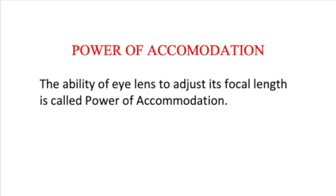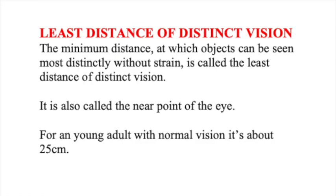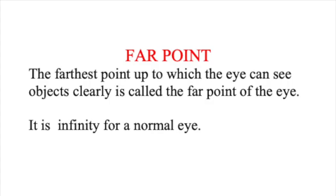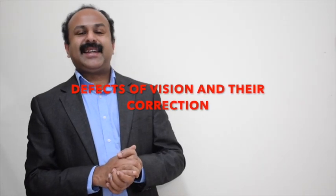The ability of the eye lens to adjust its focal length is called the power of accommodation. The minimum distance at which objects can be seen most distinctly without strain is called the least distance of distinct vision, also called the near point. For a young adult with normal vision, the near point is about 25 cm. The farthest point up to which the eye can see clearly is called the far point, which is infinity for a normal eye.